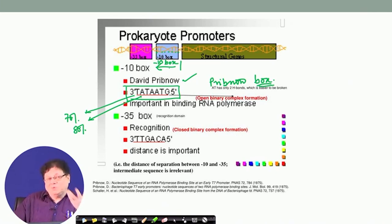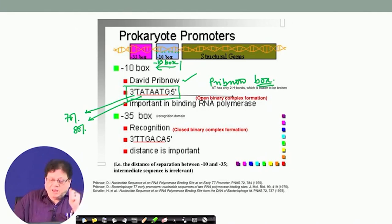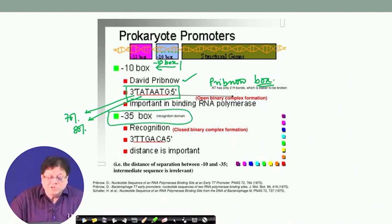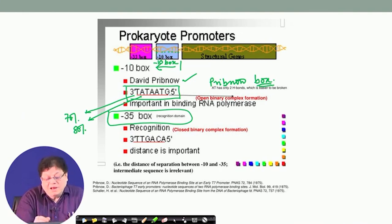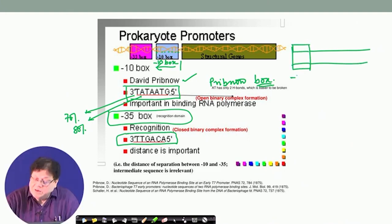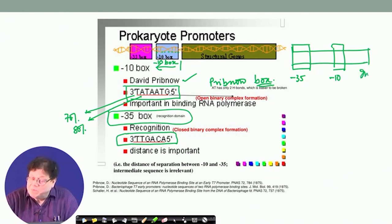The stronger the binding at the promoter region, the more efficient the transcription process — and the higher the expression level of the RNA and ultimately the protein. Weaker binding gives less efficient transcription — this is called a down mutation. If the sequence better matches the consensus, that increases expression — an up mutation. Apart from the minus-10 box, scientists have identified another recognition domain at minus-35, with consensus sequence TTGACA. So in prokaryotes there are two promoter elements: the minus-35 box and the minus-10 Pribnow box, followed by the initiation point.